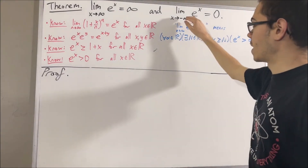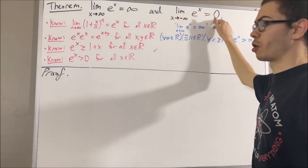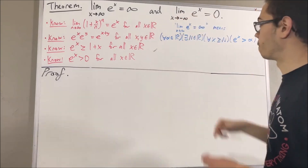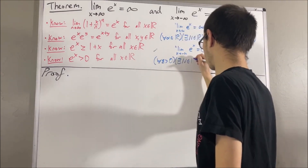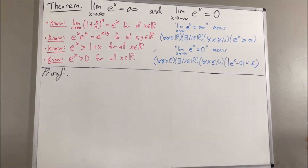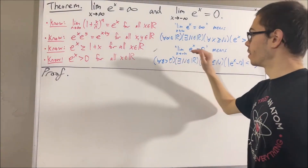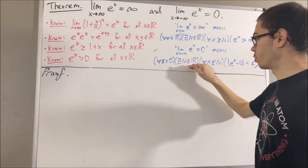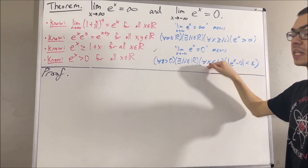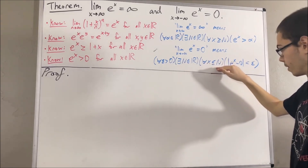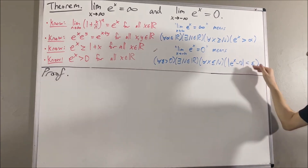Next, what do we mean when we say the limit as x approaches negative infinity of e to the x equals zero? We mean the following: for every epsilon greater than zero, there exists a real number capital N, such that for all real numbers x less than or equal to capital N, the absolute value of e to the x minus zero is less than epsilon.